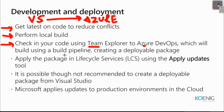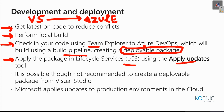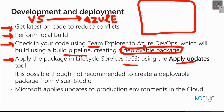Once you create a deployable package, you apply it to your system using the Apply Updates tool inside LCS (Lifecycle Services). After applying that, changes are visible inside your production live system. It is possible to create a deployable package from Visual Studio, but it is not recommended - always use the pipeline inside Azure DevOps. Microsoft also applies updates to your production environment in the cloud.